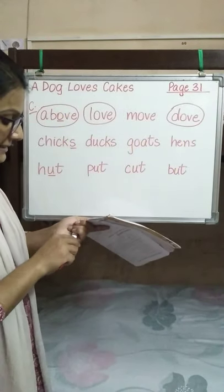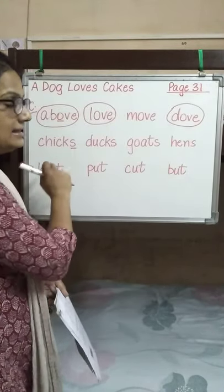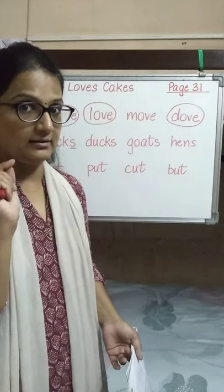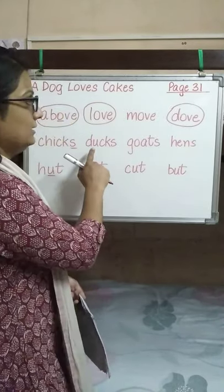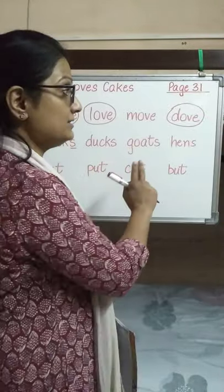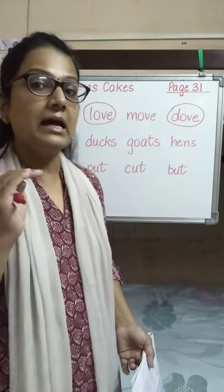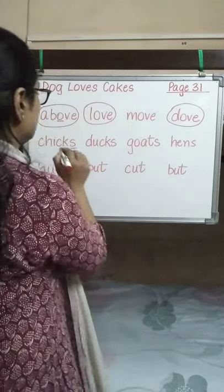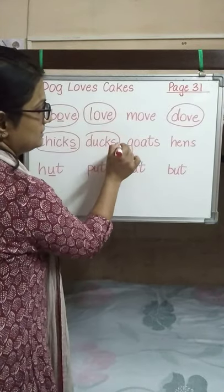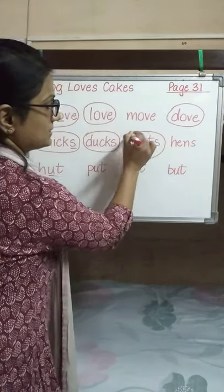The second set: 'chicks' — the S is underlined. The similar sound is coming in: ducks and goats. We don't say 'hence' the same way — it sounds different. So the similar sound words are: chicks, ducks and goats.